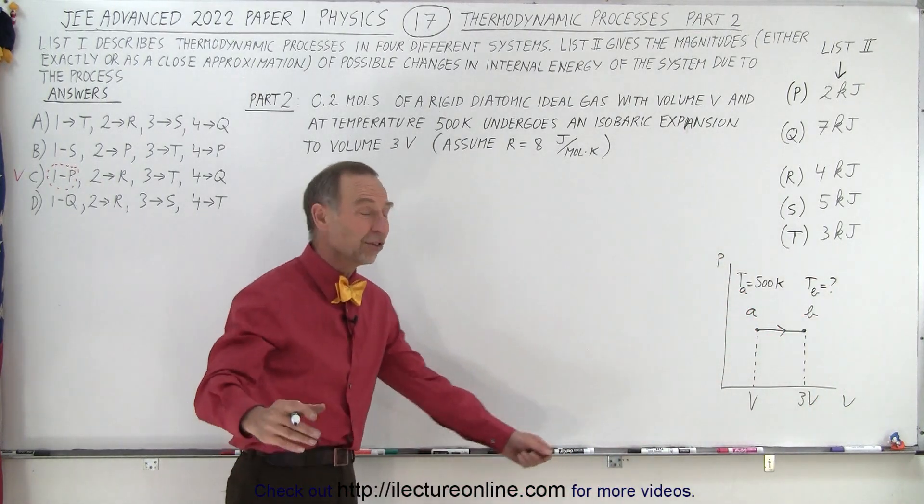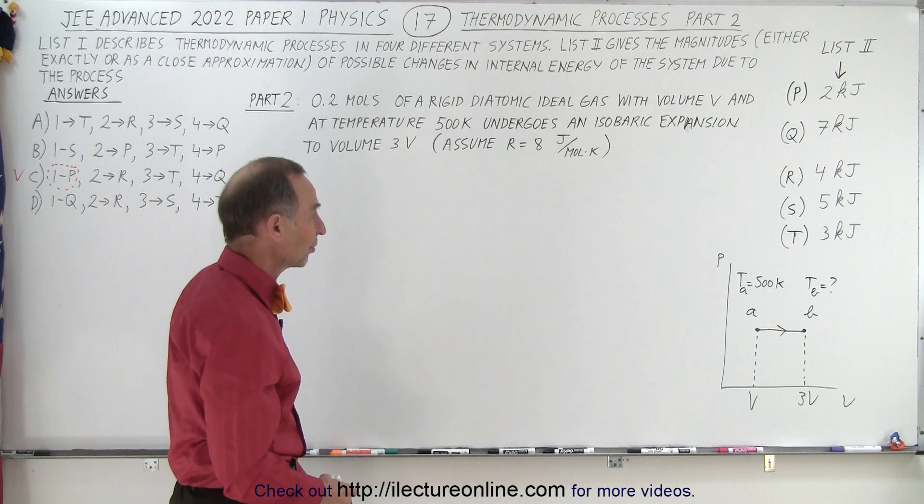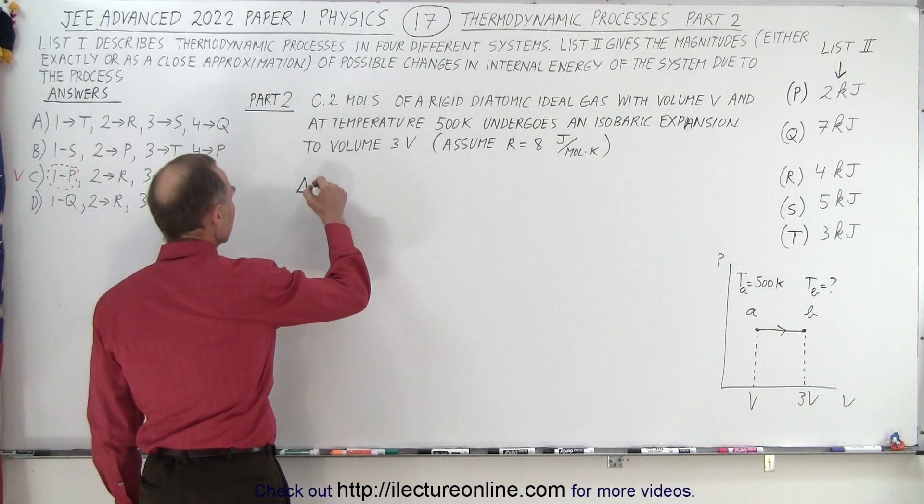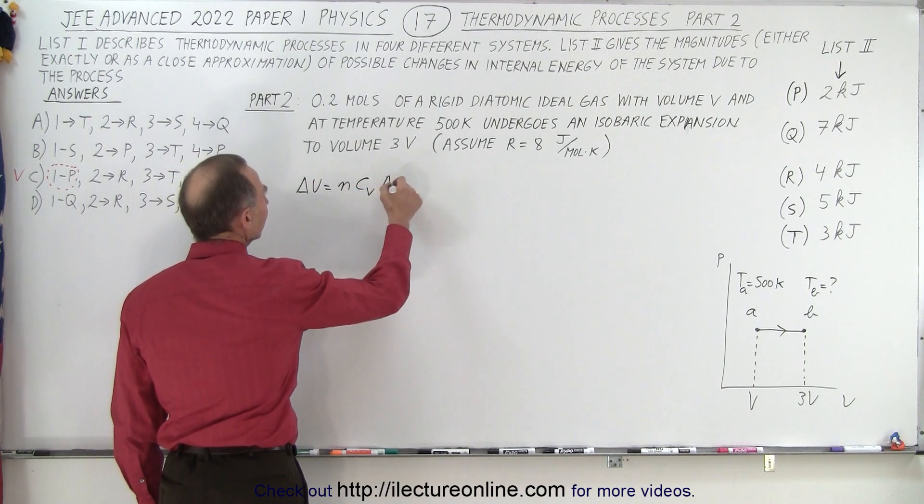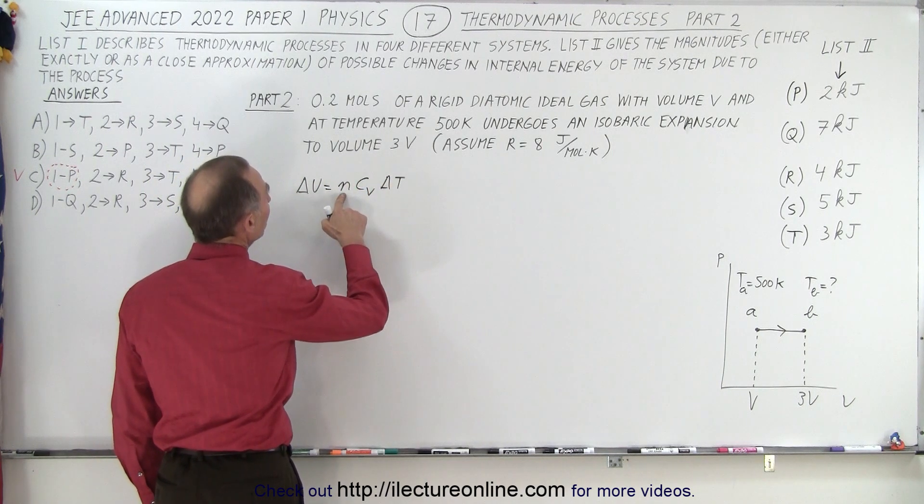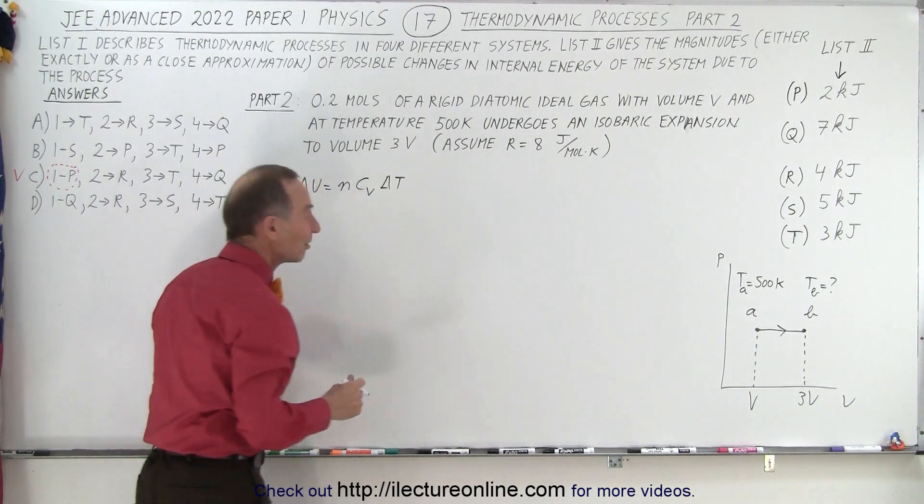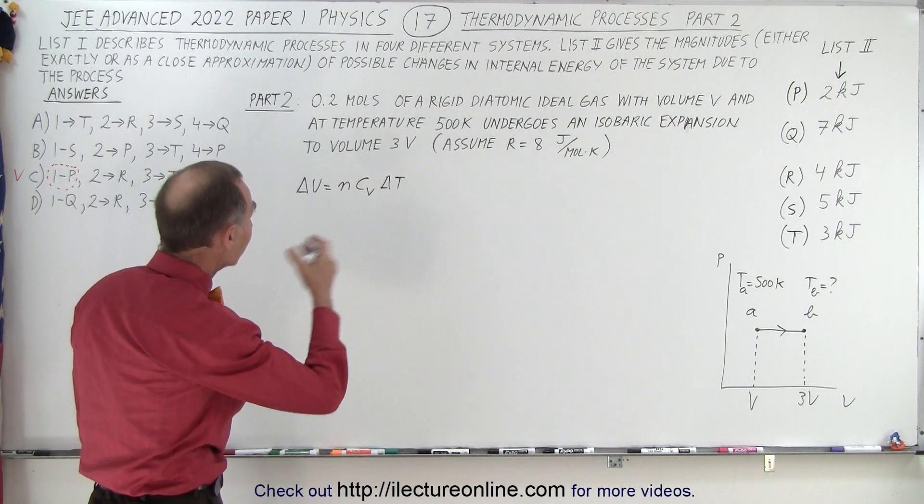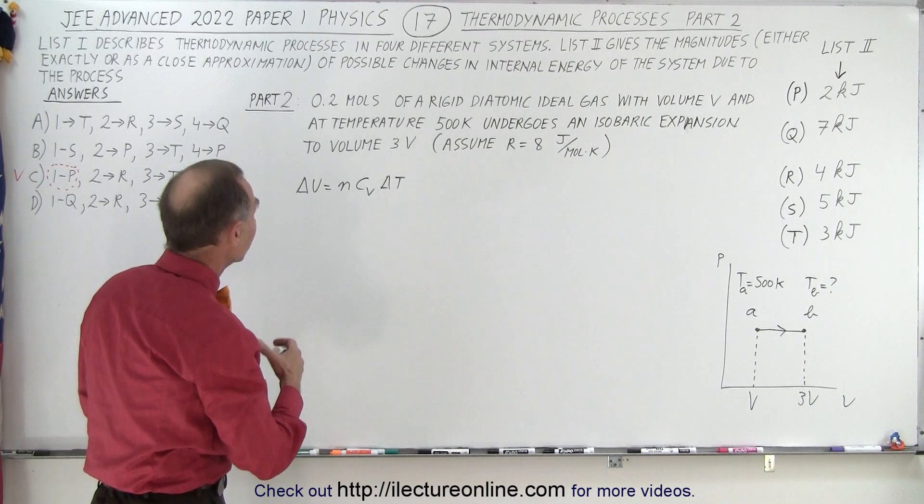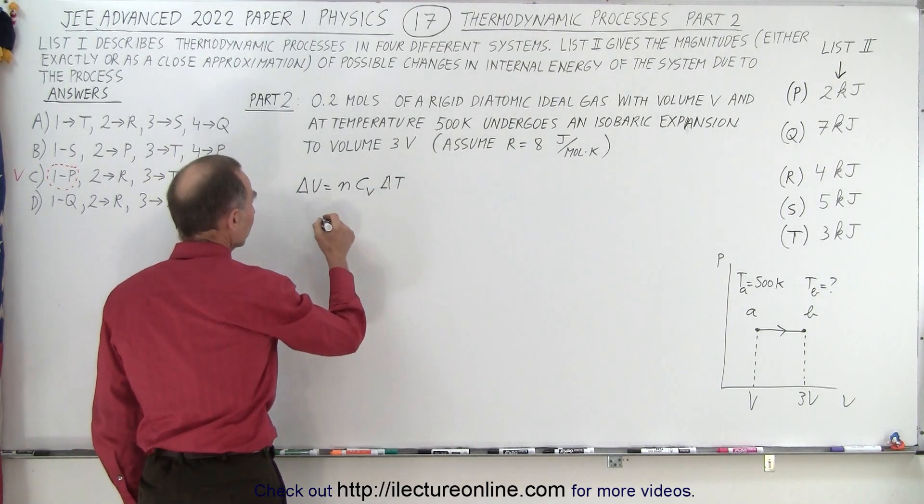Alright, so what is the change in internal energy on this system? Well we know that delta U is going to be equal to N C sub V delta T, so N is the number of moles, C sub V is the specific heat for a diatomic gas for constant volume, and then we need to know the change in temperature.